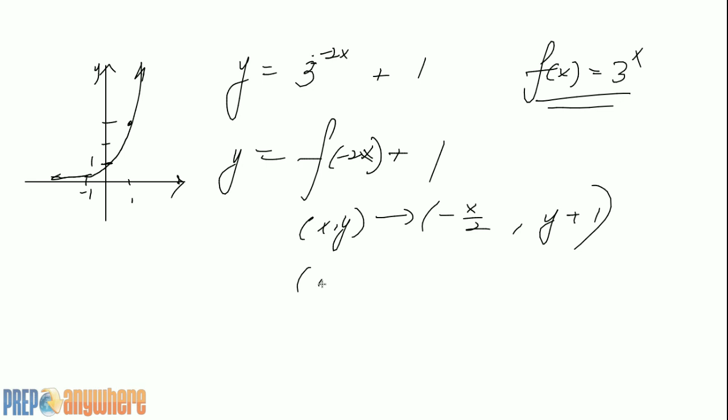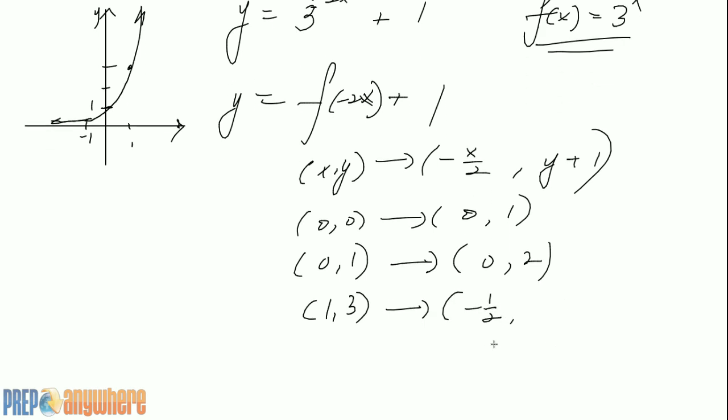Let's transform our points. The origin first: (0, 1) gives you (0, 2). Then (1, 3) becomes (-1/2, 4).